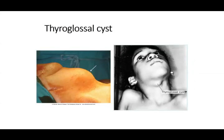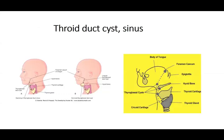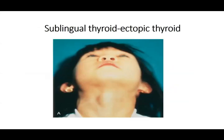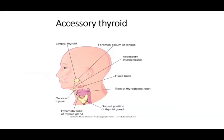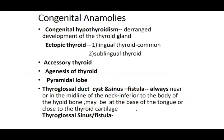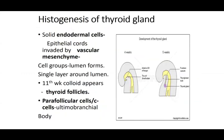Summary of thyroid anomalies: thyroglossal cyst, hypothyroidism, ectopic thyroid, accessory thyroid, agenesis, pyramidal lobe, sinus, duct cyst. It is called the thyroglossal duct cyst because at the level of the foramen cecum it is linked up to the tongue above — hence the name thyroglossal.